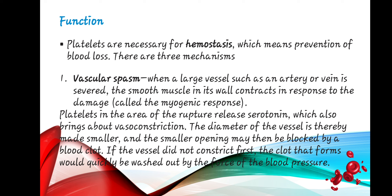Platelets are necessary for hemostasis, which means prevention of blood loss. There are three mechanisms. The first is vascular spasm: when a large vessel such as an artery or vein is severed, the smooth muscle in its wall contracts in response to the damage—called the myogenic response. Vascular spasm is the narrowing of arteries caused by persistent contraction of blood vessels. Causes include tobacco use, cocaine, trauma, irritation to blood vessels, cold weather, extreme emotional stress, and inflammatory disorders affecting the blood vessels.